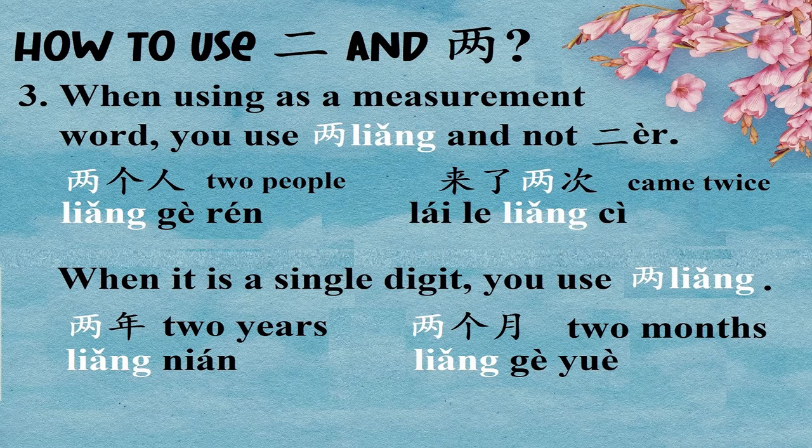When using as a measurement word, you use 两 and not 二. For example: 两个人, 来了两次. When it is a single-digit number, you use 两 and not 二. For example: 两年, 两个月.